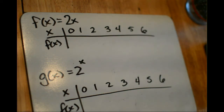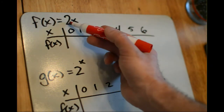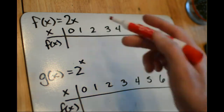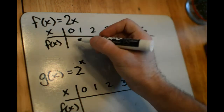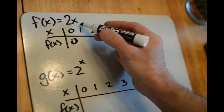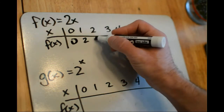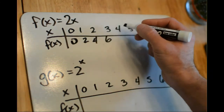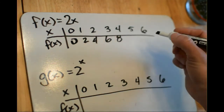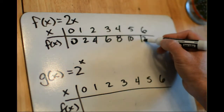This first function, f of x equals 2x, says to take whatever value of x is and multiply it by 2. So when x is 0, f of x is also 0. When x is 1, f of x is 2. When x is 2, f of x is 4. When x is 3, we have 6. When x is 4, the function value is 8. Then 5 and 10, 6 and 12.